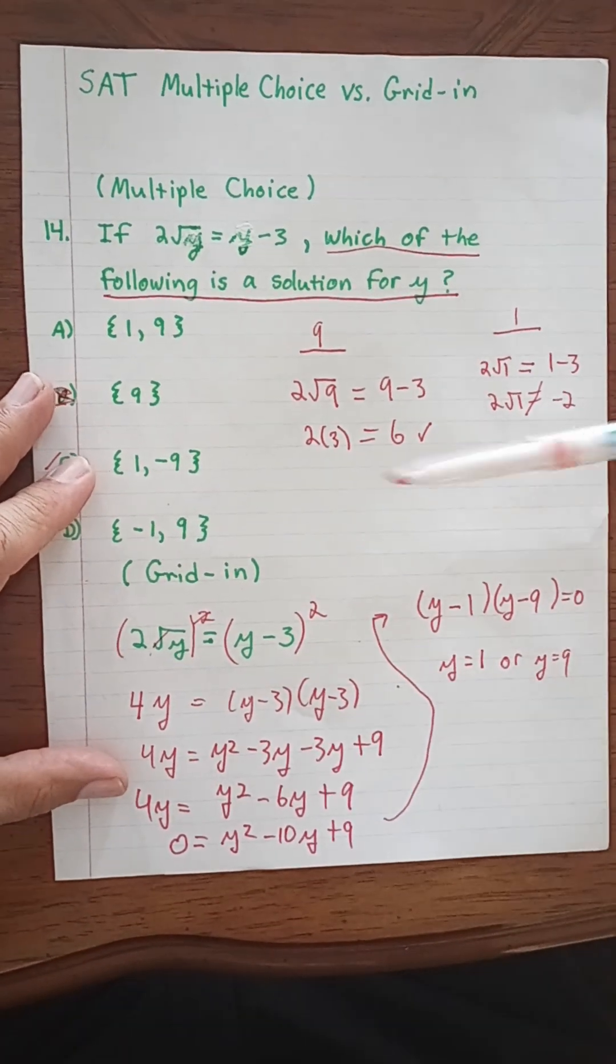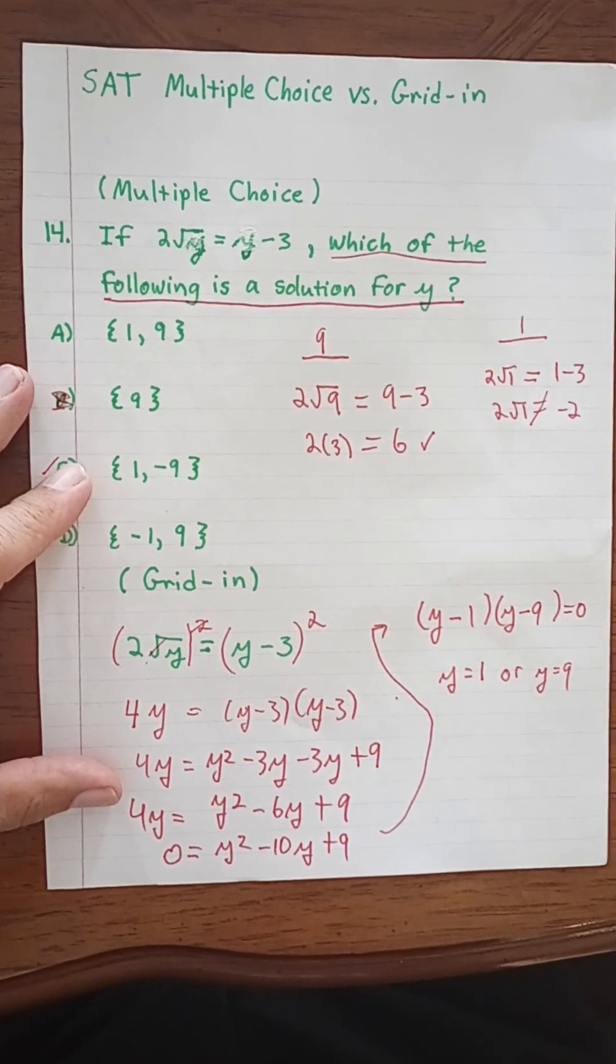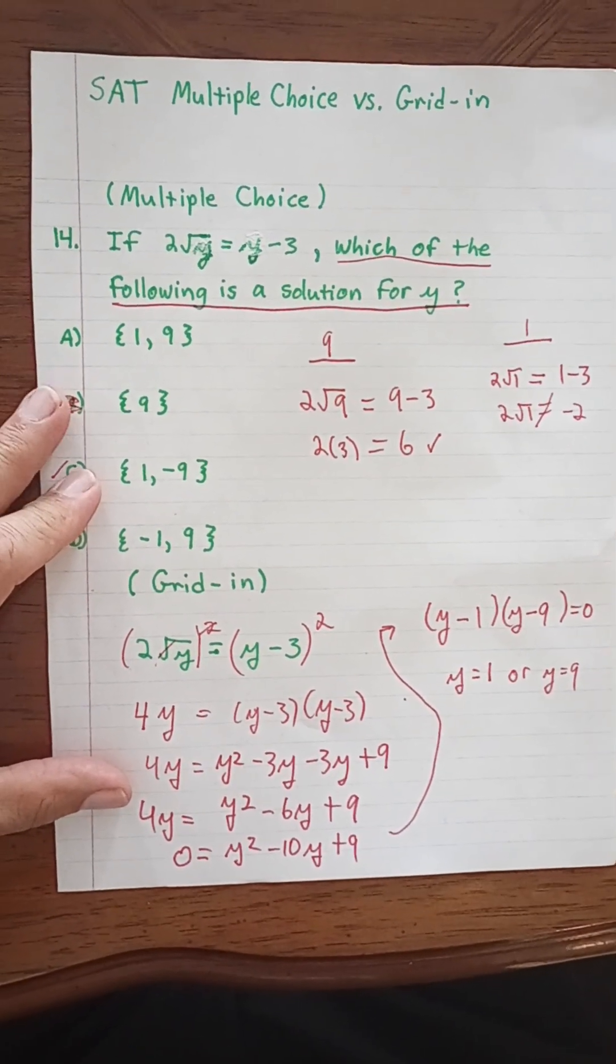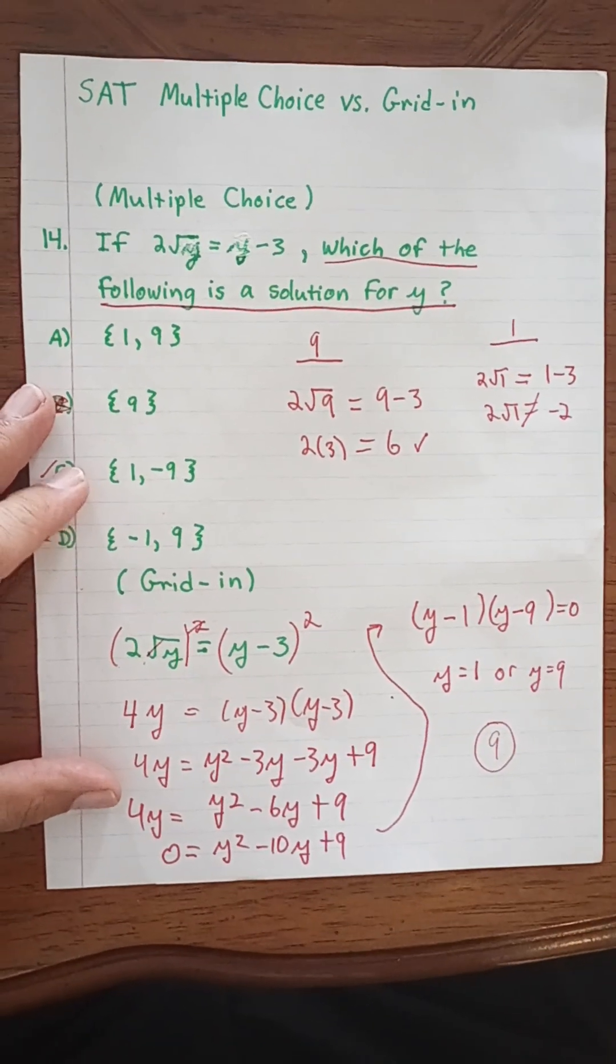Now here we plugged 9 in before, we found that it worked. We plugged 1 in and we found that it didn't work. So here our answer would be 9 on the grid in, and that's what you would put in a grid in.